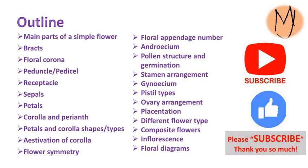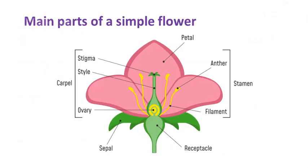As flowers are the main part of flowering plant identification, as a botanist, you need to have a basic idea about a flower. In this figure, you can see the main parts of a simple flower, including receptacle, sepals, petals, carpel that includes ovary, style and stigma, and the stamen that contains filaments and anthers.